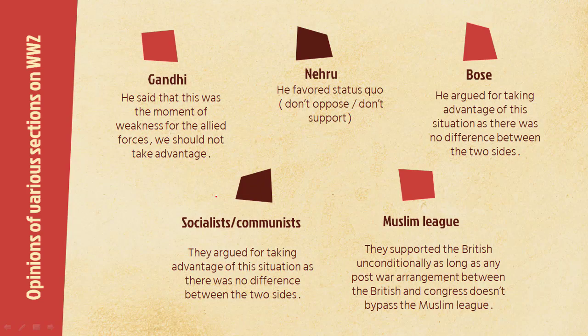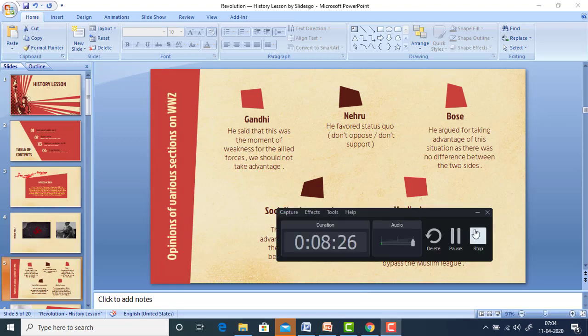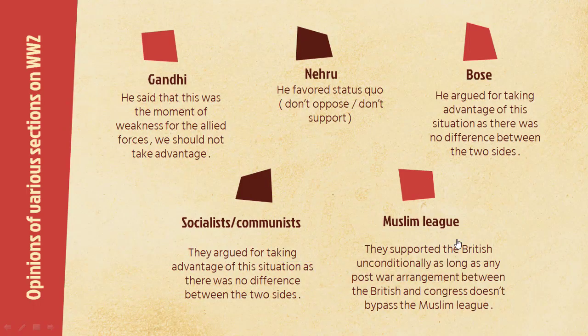We will deal with the opinions of various sections on supporting or opposing the Britishers in World War II. The first major leader is Mahatma Gandhi. He said that this was the moment of weakness of the allied forces and we should not take advantage. He was of the opinion that the Britishers are having a tough time and we should not take advantage of this situation, so we will support them.